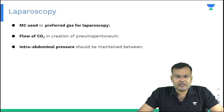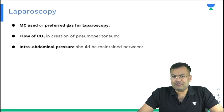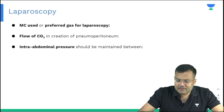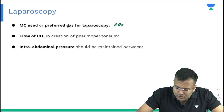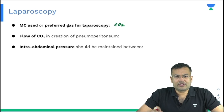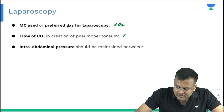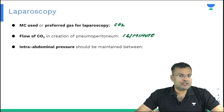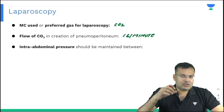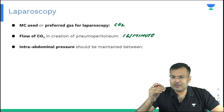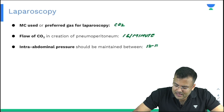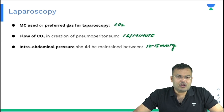Now see the important questions related to laparoscopy. The most preferred gas for laparoscopy is carbon dioxide, CO2. The flow of CO2 in creating pneumoperitoneum should be 1 litre per minute. The intra-abdominal pressure during laparoscopy should be maintained between 12 to 15 mmHg.